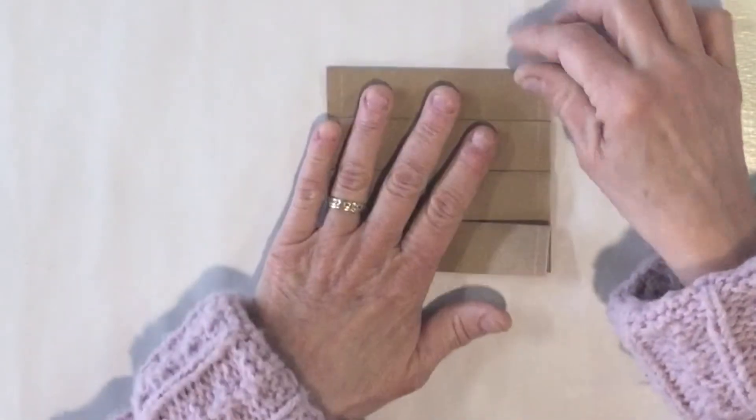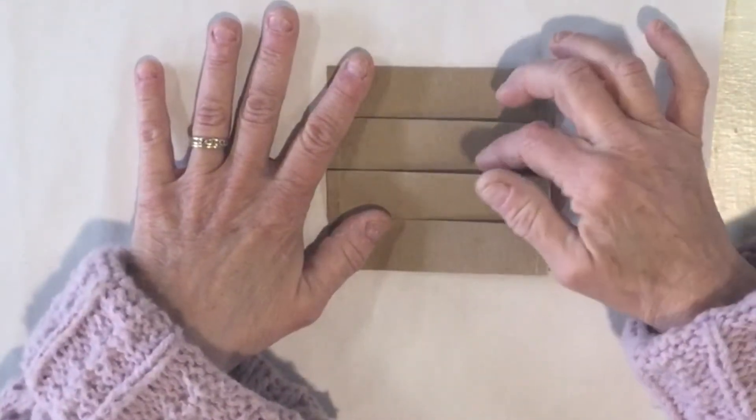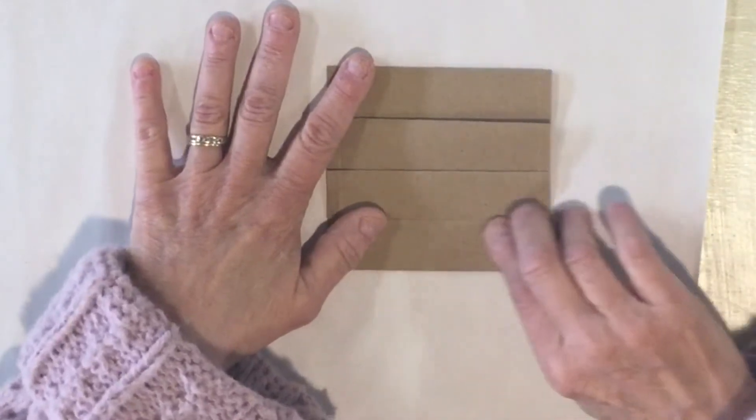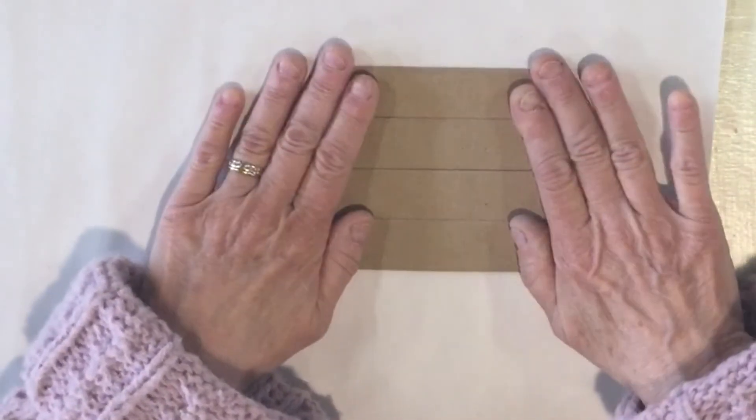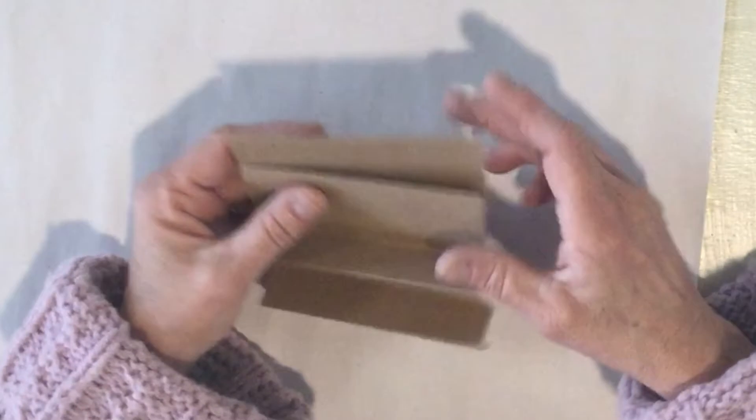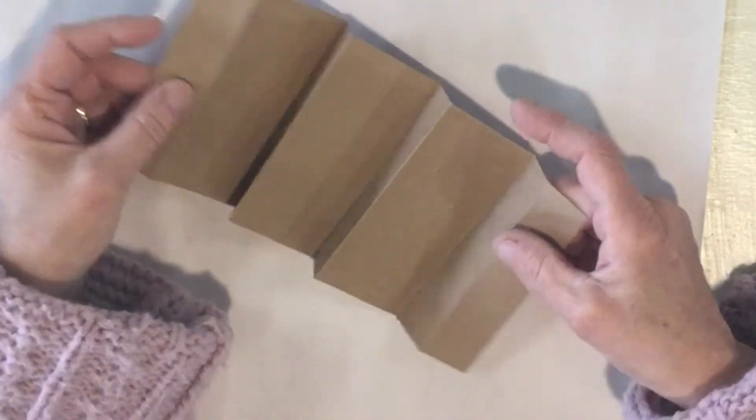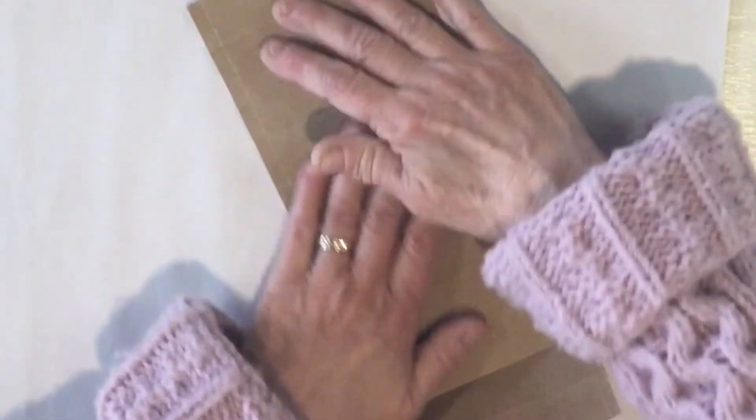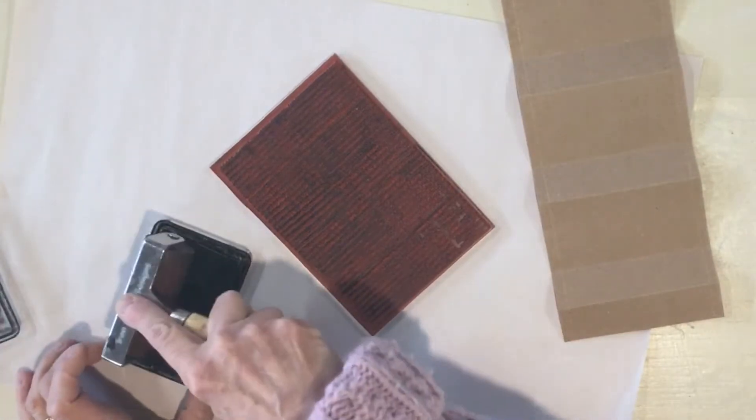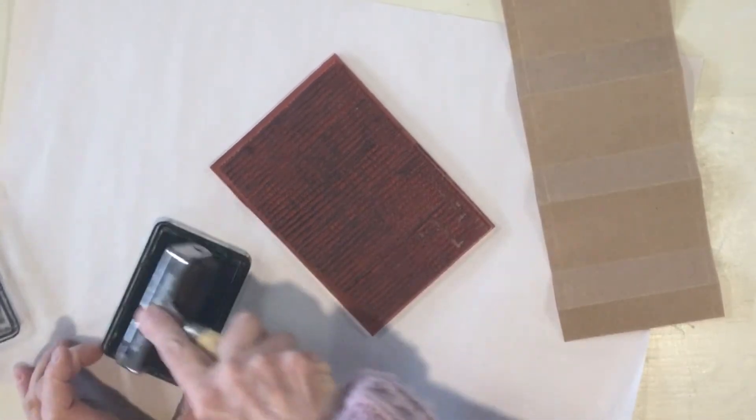Now you can see we have one, two, three little pockets here that you can use. Before I decide to tape it all together, if you want to stamp it, this is a good time to do it. You don't have to embellish this. I just like the look of this, but you could use anything or nothing, or you could just use beautiful patterned paper.